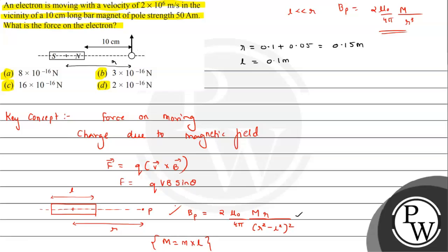Now we can calculate the magnetic field. B_P can be written as 2 × μ₀/4π with value 10^-7, times m = 50 ampere meter, times length 0.1 m, times r = 0.15.